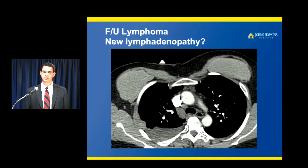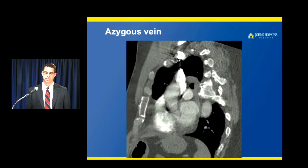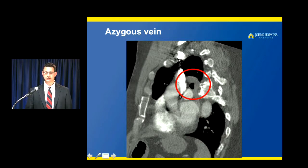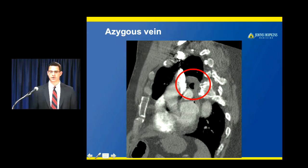Another case of follow-up lymphoma with a question of new lymphadenopathy: a new abnormality looked a lot like a node on axial images, but on sagittal images it's clearly a vessel — the azygous vein draining into the superior vena cava. Usually there's reflux of contrast into the azygous vein at this level, but regardless it's a mimic that can be teased out on sagittal images.